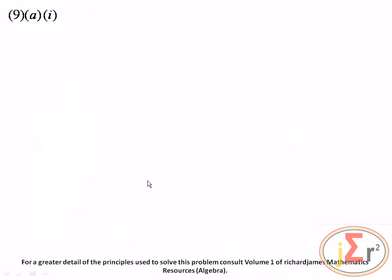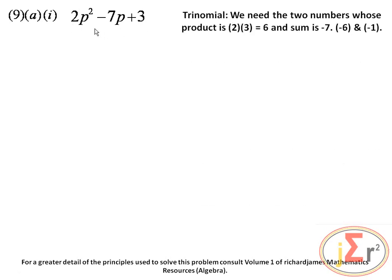We will continue by factorizing a trinomial. When factorizing a trinomial, we take the coefficient of the squared term and multiply by the constant value. So 2 times 3 equals 6. We are searching for two numbers that multiply to give positive 6 and when added give negative 7. Those two numbers are negative 6 and negative 1, which become the two middle terms.